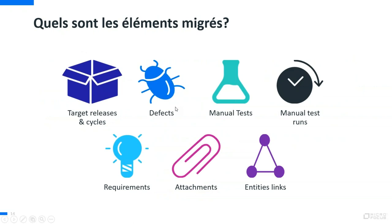Les éléments migrés : on va pouvoir récupérer tout ce qui est release et cycle cible, ce qui va devenir des backlogs et sprints dans Octane, les defects (anomalies), les tests manuels, les exécutions de tests manuels, les exigences, les pièces jointes et les liens entre ces différentes entités.